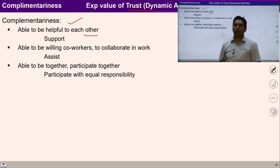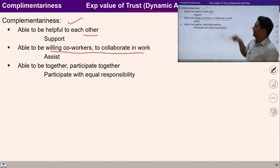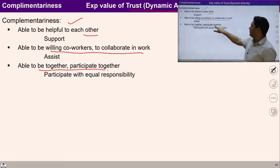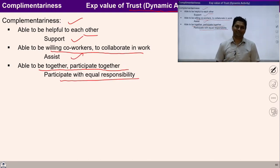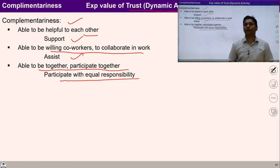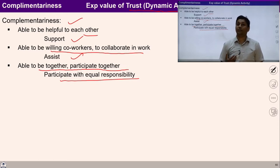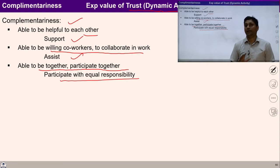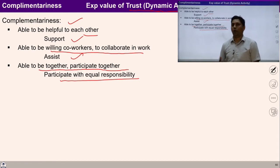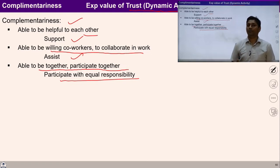When we are assured of the intention of each one of us, we learn to cooperate in complementarity. We are willing to work together, able to participate together. We support, assist, and participate with equal responsibility with each other — it is a manifestation of the feeling of trust. Being assured of each other's intention, we are able to collaborate and participate with equal responsibility. If we have doubt instead of trust, we waste our energy and time.